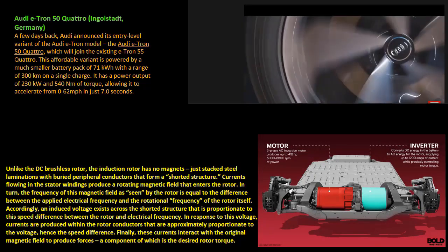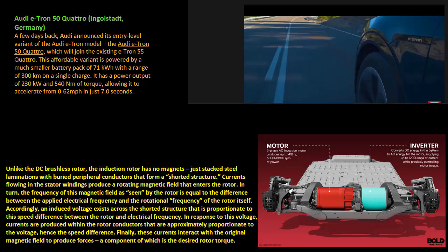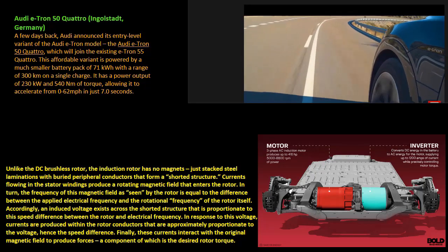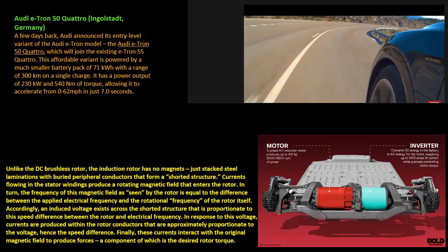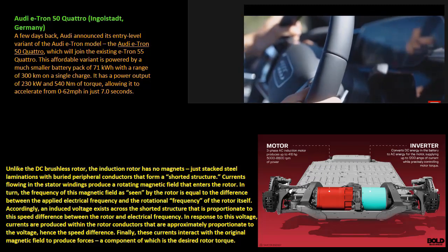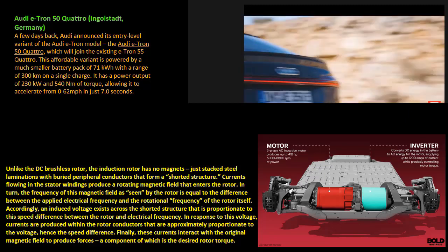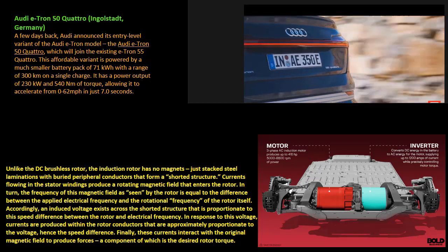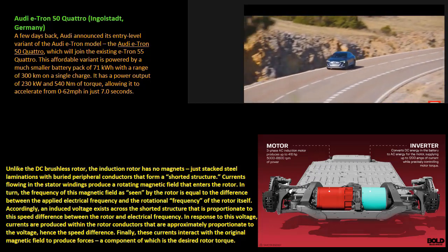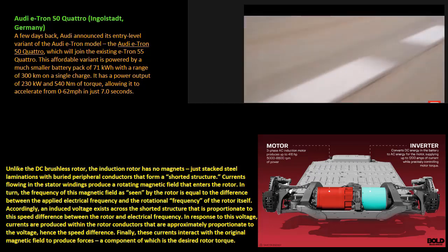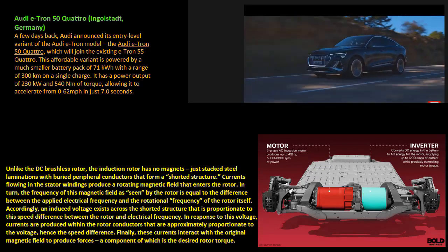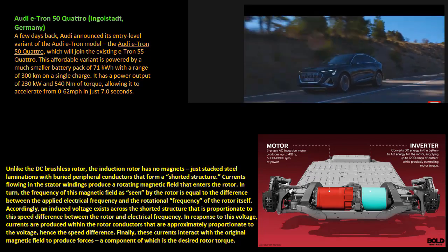Unlike the DC brushless rotor, the induction rotor has no magnets, just stacked steel laminations with buried peripheral conductors that form a shorted structure. Currents flowing in the stator windings produce a rotating magnetic field that enters the rotor. In turn, the frequency of this magnetic field as seen by the rotor is equal to the difference between the applied electrical frequency and the rotational frequency of the rotor itself.